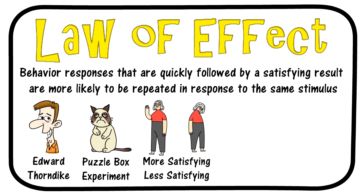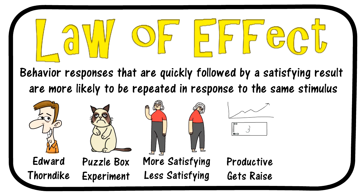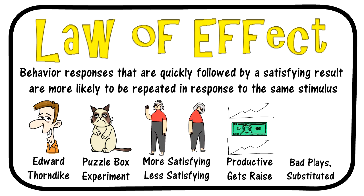This is a form of behavioral conditioning. One example relates to work productivity: if a person's work behaviors are productive, that person is likely to get a raise — a satisfying response — and to continue to be productive for even larger raises. Another example refers to sports, where if a player takes a bad shot or makes a bad play, the coach might substitute that player out of the game. This is a dissatisfying response, and the player is less likely to take a bad shot again.